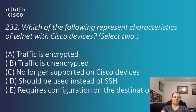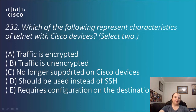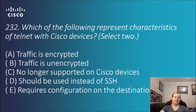Question 232: which of the following represents characteristics of telnet with Cisco devices — select two. Options: traffic is encrypted, traffic is unencrypted, no longer supported on Cisco devices, should be used instead of SSH, requires configuration on the destination device. You can nearly do a process of elimination here. We know it's unencrypted — all clear text — so that's one. It is supported. 'Should be used instead of SSH' would mean being unsecure, so not that. The answers are B and E: traffic is unencrypted and requires configuration on the destination device.